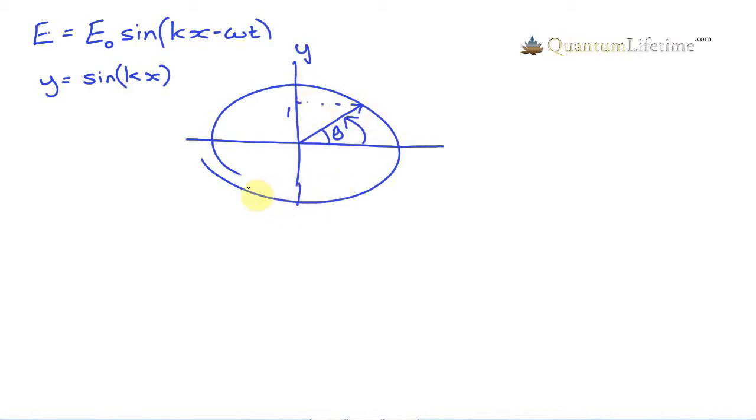And if we draw this out so that we have a graph where theta increases along in this direction and we've got y represented vertically here, then we get a graph like this, which is the familiar graph of sine of theta, sine of x, or whatever you like.